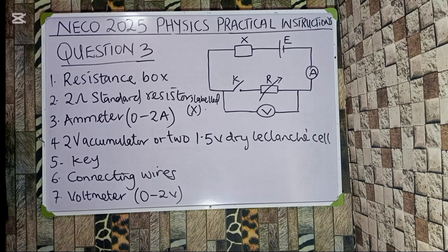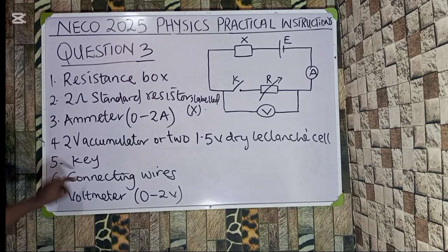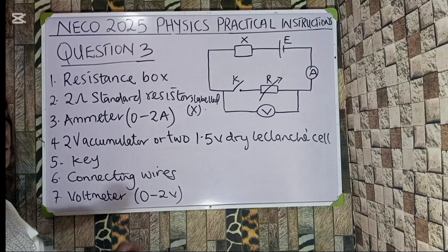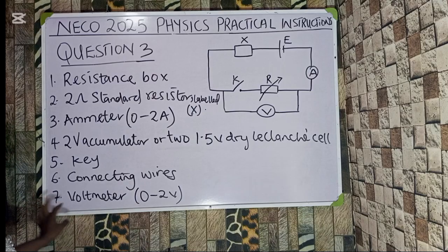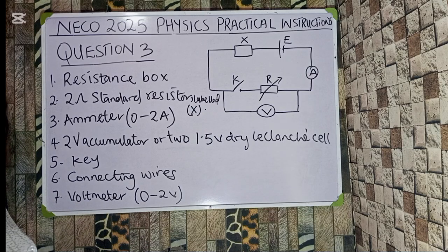Question 3. We are asked to provide the following apparatus: resistance box, 2 ohm standard resistor labeled X, ammeter ranging from 0 to 2 amperes, 2 volt accumulator or 2 1.5 volt dry cell, key, connecting wires, and a voltmeter ranging from 0 to 2 volts.